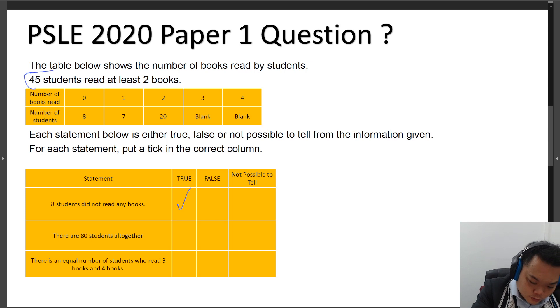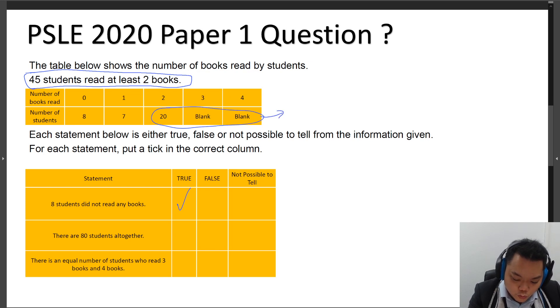They say here that 45 students read at least 2 books. So this means that there are 45 students who read 2 or more books. So in total, the 3 of these should add up to 45. You will see that 8 plus 7 plus 45 would give you 60 at most. So there is no way that you would have 80 students altogether. You are able to obtain a definite number here. You are able to say that this is categorically false.